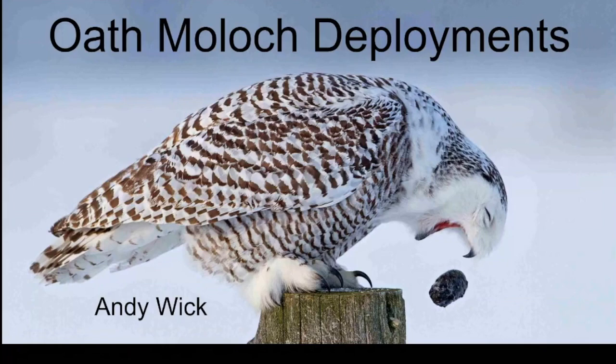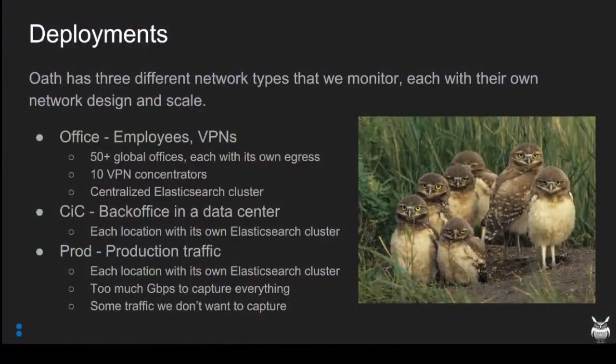We're going to be talking about Oath Moloch deployments. We have three different types of networks that we monitor at Oath: Office, which is your employees and VPNs; CIC, which is your back office in a data center — that might be where you have some SAS or SAP; and then production traffic. We monitor all three in different ways, with different retentions.